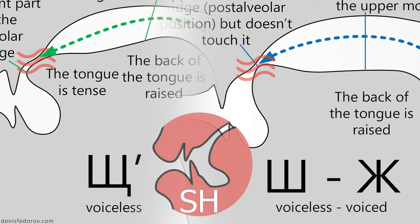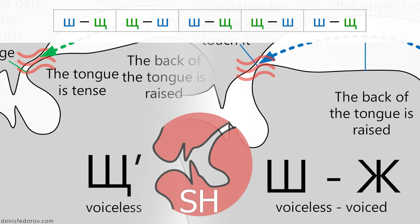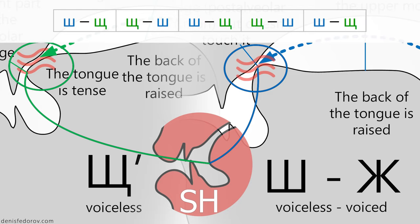Now let's work on the discrimination between SHA and SHA by pronouncing the following pairs. Each time you need to pull the tip of the tongue back and point against the roof of the mouth at a post-alveolar position — at the beginning of the sharp uprise in the mouth — for the SHA, which is blue. And push the tip of the tongue far forward almost till the upper incisors for the soft SHA, which is green. Repeat after me the following pairs.